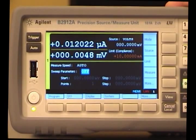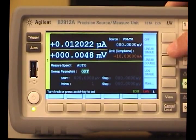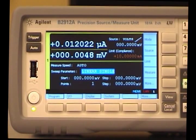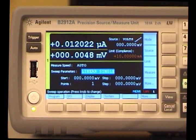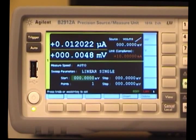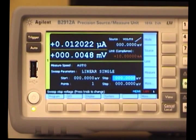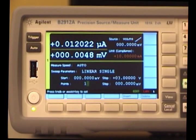First, set the sweep parameters to linear single. Then you can find the staircase symbol here, and set the start voltage to 0, stop voltage to 3V, and the number of points to 101.